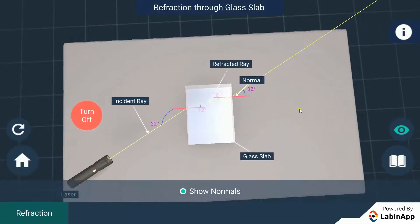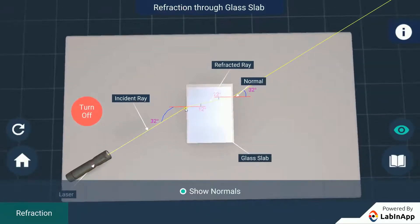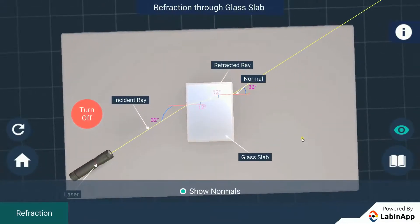We can see that when the incident ray is making the angle 32 degrees with the normal, the emergent ray also makes the angle 32 degrees with the normal. Thus, the refraction of light through a glass slab makes the emergent ray parallel to the incident ray with some lateral shift.